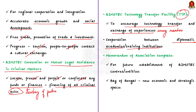The fifth area of interest is cooperation between diplomatic academies and training institutions. The last area of interest is the template of memorandum of association, for the future establishment of BIMSTEC centers or entities, which presents signs of optimism and also for the comeback of the Bay of Bengal as a new economic and strategic space.